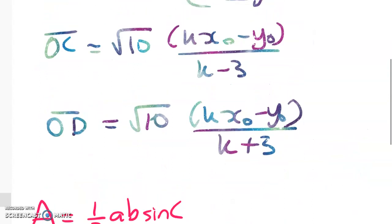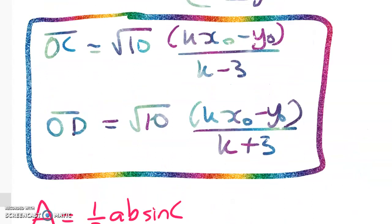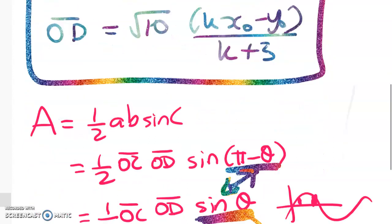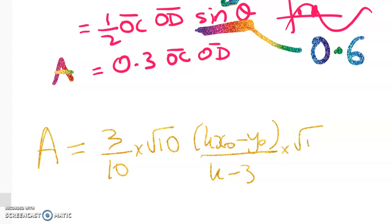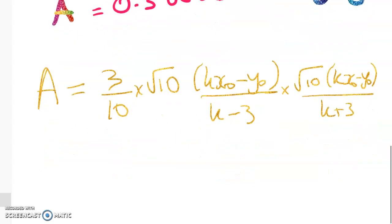And up here, we figured out lengths OC and OD. So we need to substitute those in. And you can see from looking that we're going to get quite a nice kind of expression down here. Okay, so I get A is equal to 3 tenths of root 10. What did we have? Root 10 kx0 minus y0 over k minus 3 times root 10. This is for OD. So we've got kx0 minus y0 over k plus 3. So that simplifies quite well. That leaves me with 3 times this squared. And I've got a nice difference of two squareds down here.